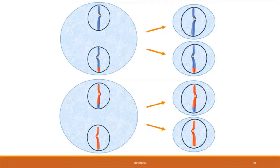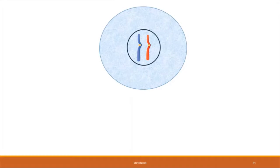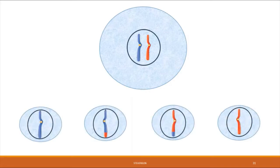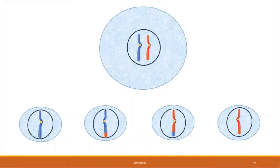Looking back at where we started and where we finished: we began with one cell, one nucleus, and two chromosomes — before S phase, before DNA duplication. By the end of meiosis, we have four cells, each with a single chromosome. Importantly, these chromosomes are not identical to each other — no two cells in the mix are exactly the same genetically. We started with a diploid cell and, through meiosis, yielded four haploid cells, each genetically distinct because of crossing over, which allowed exchange of genetic material.